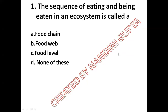The sequence of eating and being eaten in an ecosystem is called: option A food chain, option B food web, option C food level, option D none of these. The correct answer is the food chain.